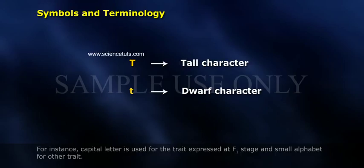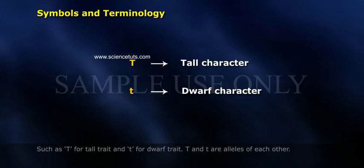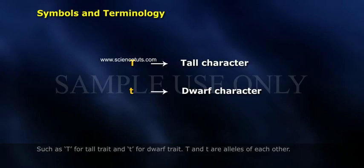A capital letter is used for the trait expressed at the F1 stage and a small letter for the other trait — such as capital T for the tall trait and small t for the dwarf trait. Capital T and small t are alleles of each other.